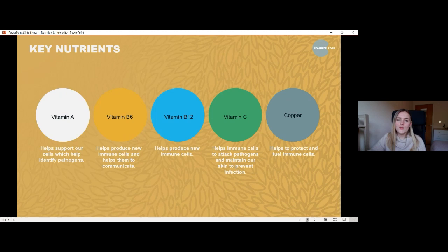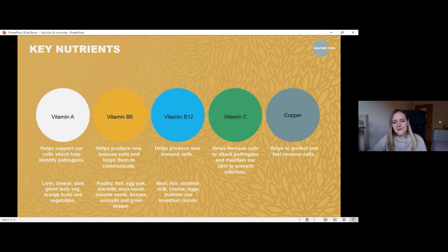So let's have a look at what foods these can be found in. Vitamin A: liver, cheese, dark green leafy vegetables, orange fruits and vegetables. B6: things like poultry, fish, egg yolk, marmite, sesame seeds, some fruit and vegetables. Vitamin B12 can be found in meat, fish, shellfish, milk, so dairy and meat products a lot of the time and also in marmite and some breakfast cereals as well. Vitamin C, mainly in different types of fruit and vegetables, and copper can be found in all sorts of places. So bread, breakfast cereals, fish, pulses, seeds, and some fruit and vegetables as well.